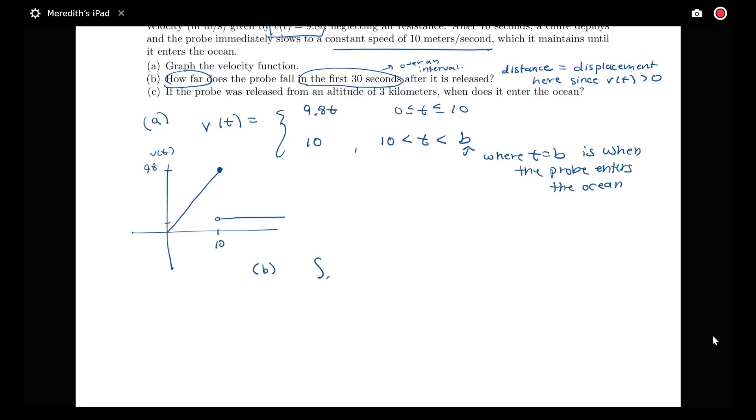So to answer this question about how far the probe falls in the first 30 seconds, we're looking at taking an integral from 0 to 30 of our velocity here. So we can do this with some geometry of the problem. Now that we have the graph right in front of us, we're looking at finding the area of a triangle plus the area of this rectangle. Or we can look at writing out what this integral is in terms of the function.